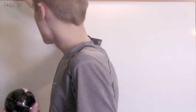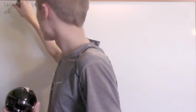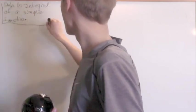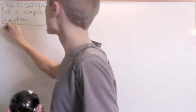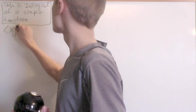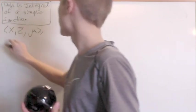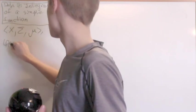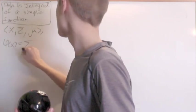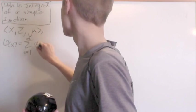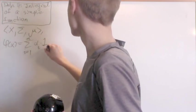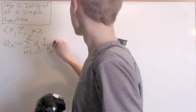Next is going to be definition 4, the integral of a simple function. Given a measure space x sigma mu, phi of x simple, which I'll write it out because it's sort of important. So alpha i times 1, ei of x.